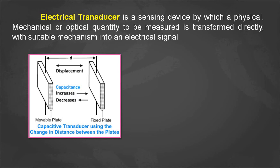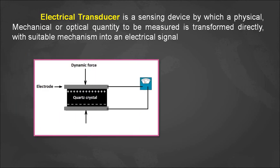The capacitor transducer works because capacitance is inversely proportional to the distance between the two plates. If the distance between the two plates varies, the capacitance also varies — so depending upon the displacement, the capacitance will increase or decrease. Here we are converting displacement into a change in capacitance. Another example is the piezoelectric crystal, which is an active transducer that converts force or pressure into voltage directly, requiring no external supply.